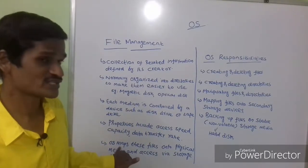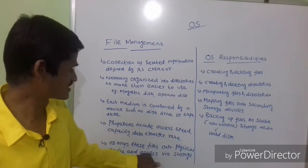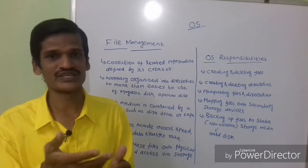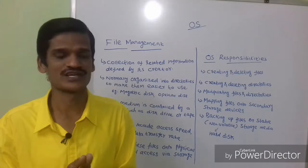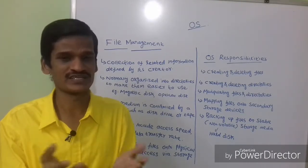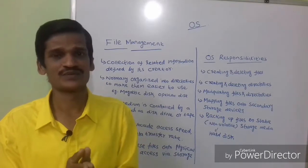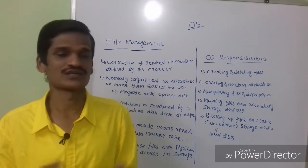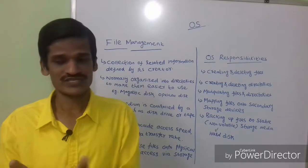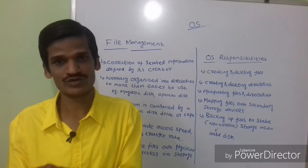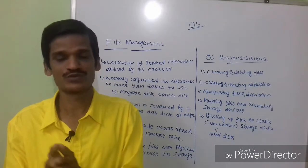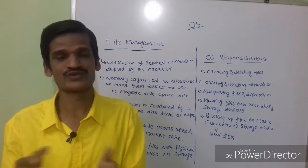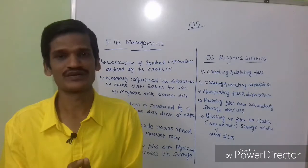The operating system maps these files onto physical media and provides access via storage devices. All the files have to be copied to your physical media — that means magnetic disk or hard disk. We can then access that data via your storage devices, which may be CD, DVD, pen drive, or hard disk. The OS is responsible for copying all the data to your physical media.